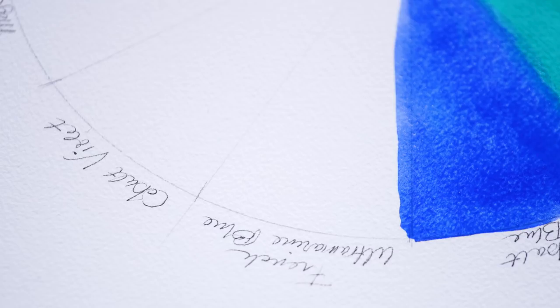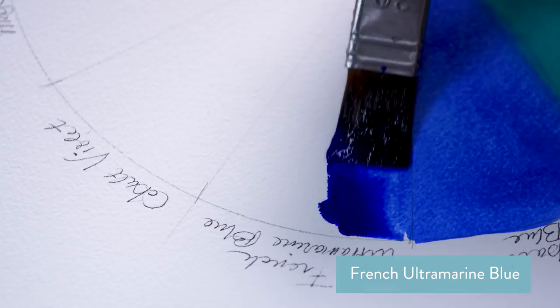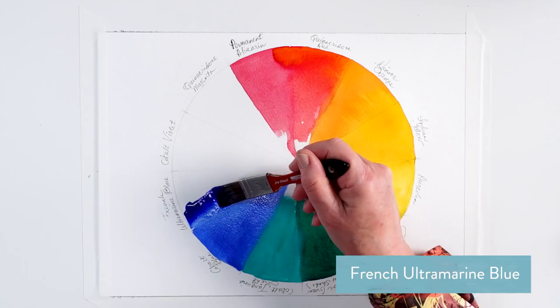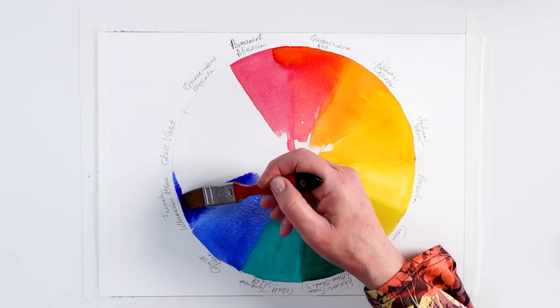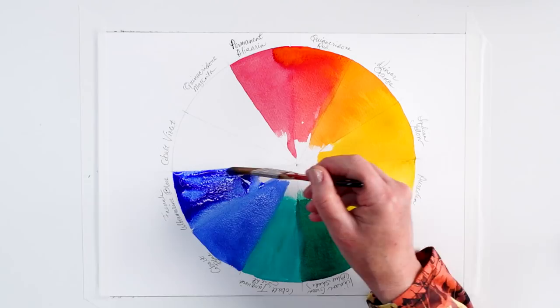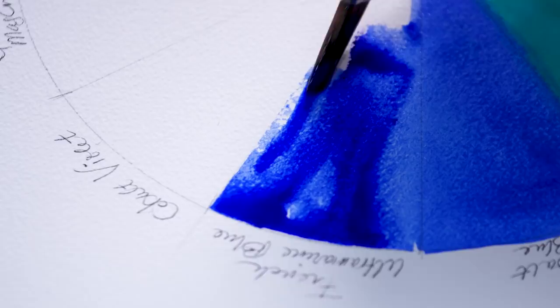Likewise, French ultramarine blue is transparent. It's also what we call granulating, and I'll explain that in a minute. Some of these other paints are granulating. This is a little bit warmer—we're now moving back towards permanent alizarin, so our blues are getting a little bit warmer into the purples.